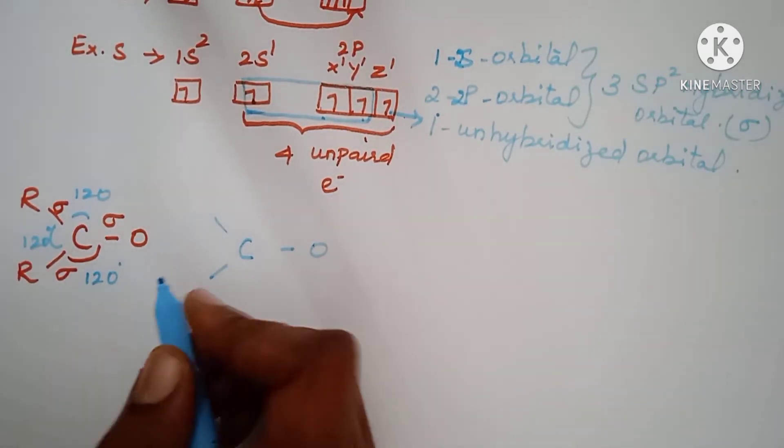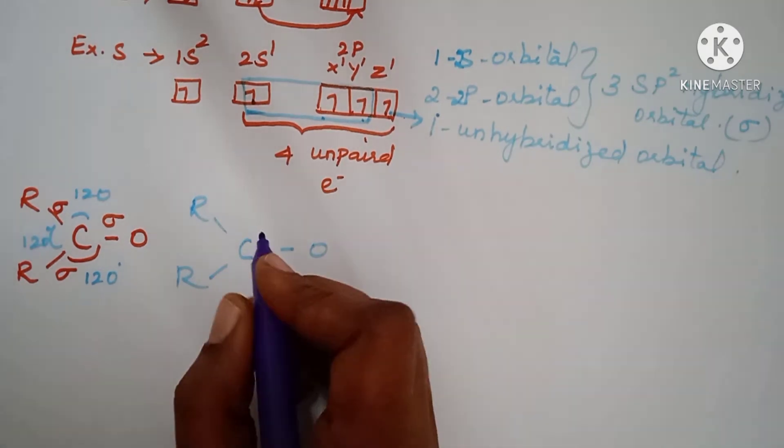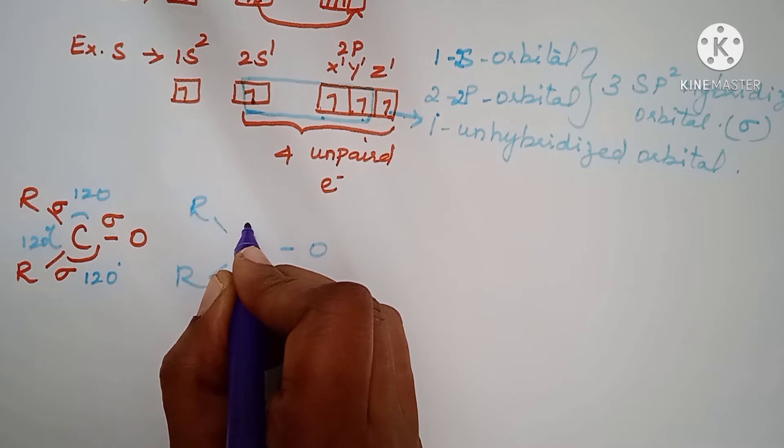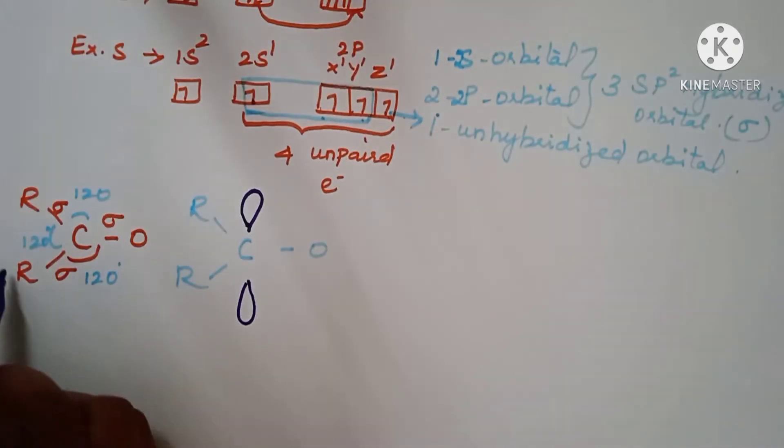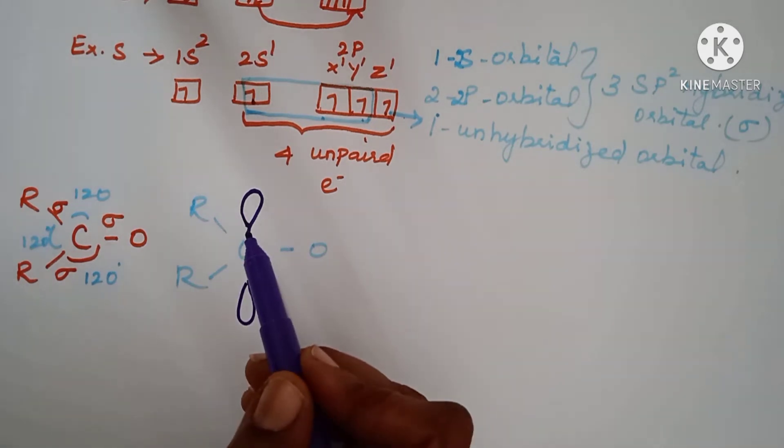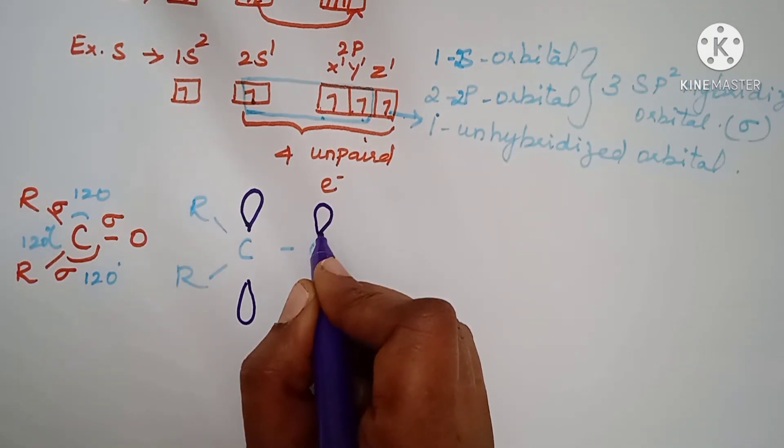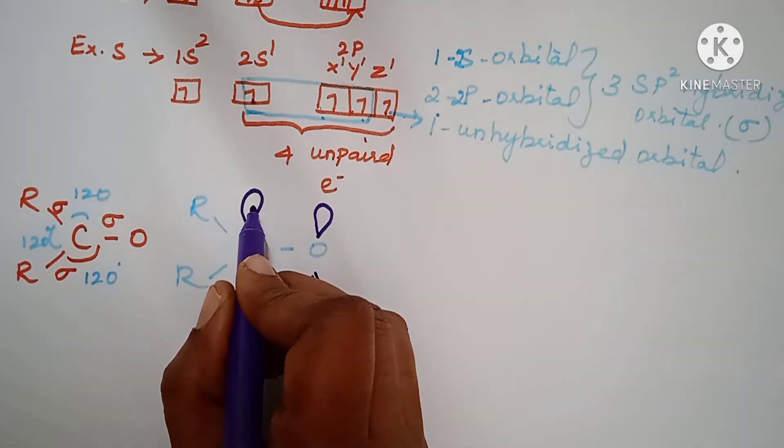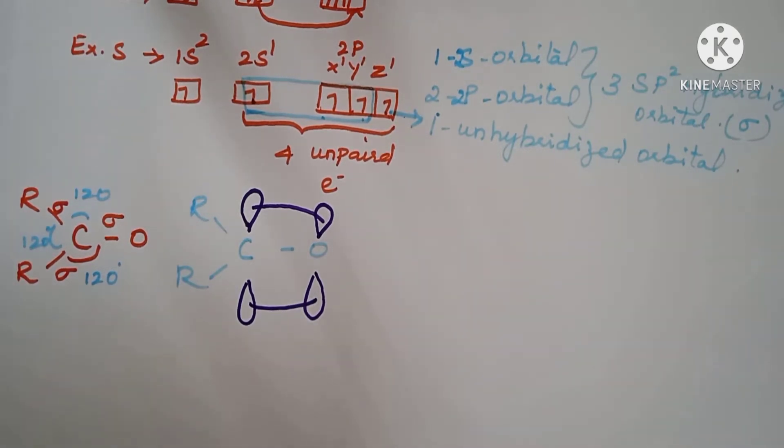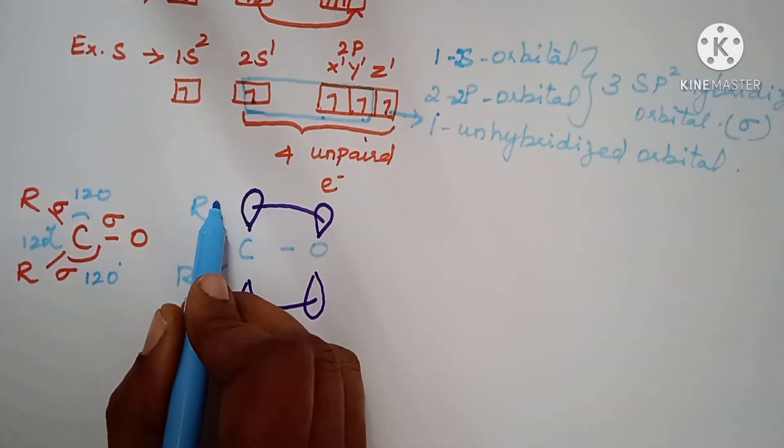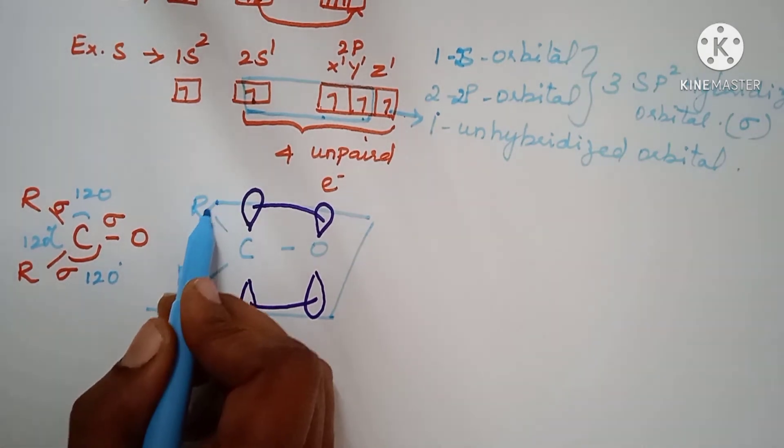Now, here unhybridized p orbital perpendicular to the plane. That means all these three compounds are in the same plane, this unhybridized p orbital of carbon overlaps with the p orbital of oxygen atoms with the pi bonds. Now, I think you got it. Now, this is the way planar structure will be there. Like this, it forms.